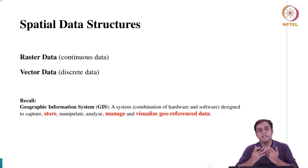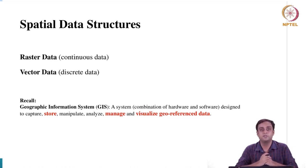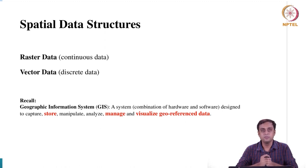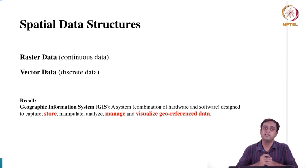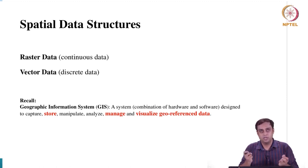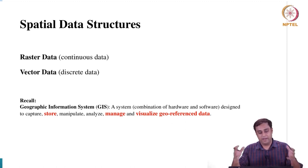We also looked at two components of spatial data: spatial heterogeneity and spatial dependence. Spatial heterogeneity is more of a large-scale global phenomenon, whereas spatial dependence, as we saw in the previous lecture, is a more local phenomenon, where values nearby in space might be behaving similarly to other values in their locality compared to values that are farther away.